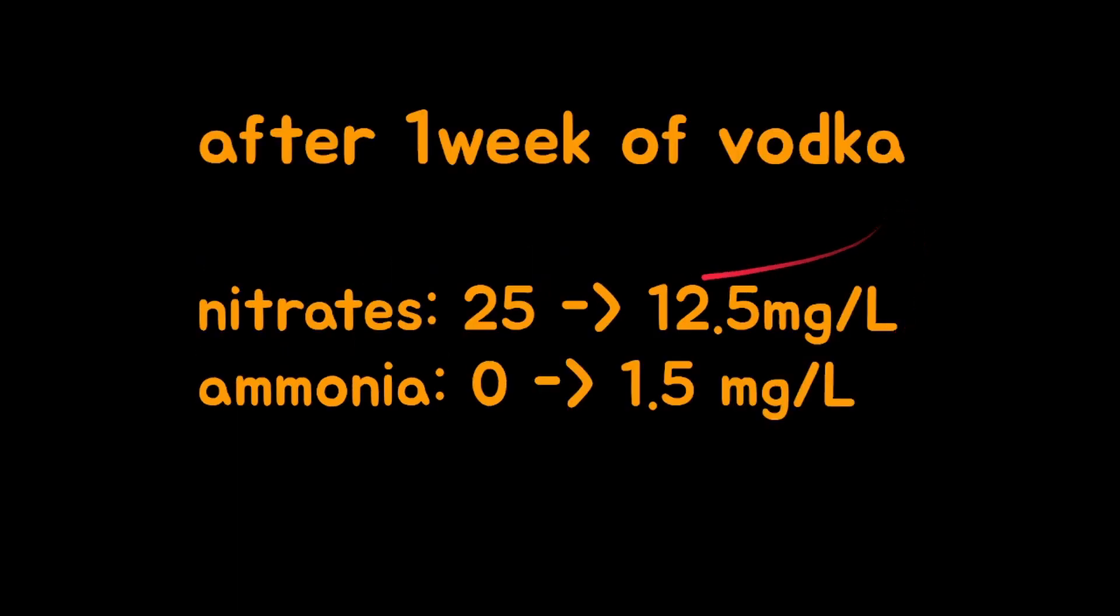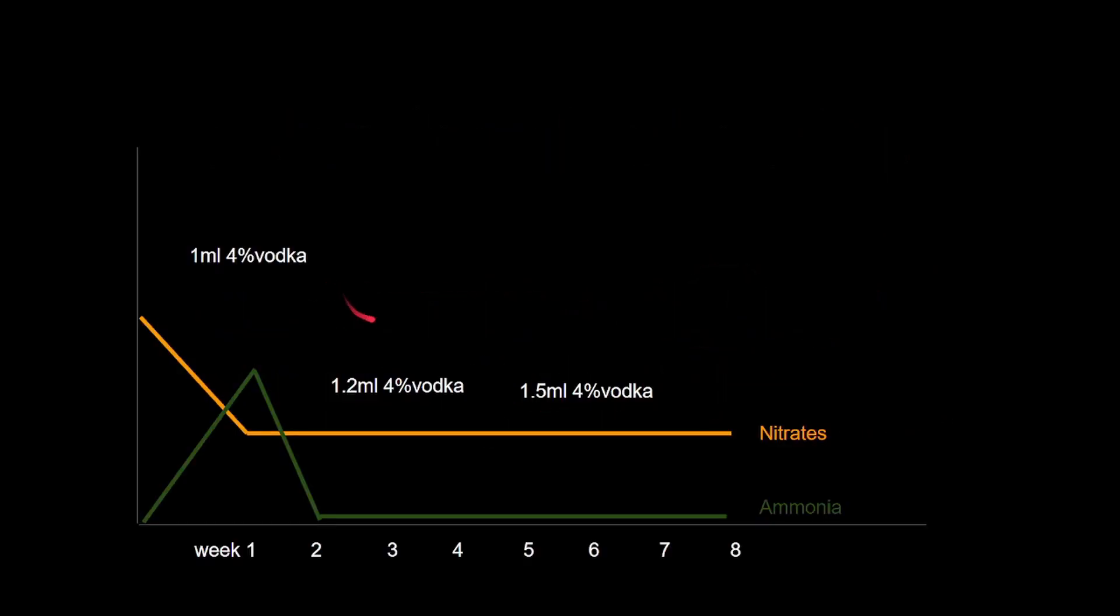So after one week of vodka, nitrates went from 25 to 12.5. Ammonia went from 0 to 1.5. So here is what the nitrates and ammonia level looks like during the two month course of the experiment. So for the first two weeks, I was just doing extra feeding to increase the nitrates artificially to 25. And that's when I started adding one milliliter of 4% vodka per day. So after one week, I did a measurement and the nitrates dropped, but ammonia, which was at zero previous to adding vodka, the ammonia level spiked to 1.5. And at week two, the ammonia level stabilized again to about zero. And it stayed that way for the rest of the experiment.